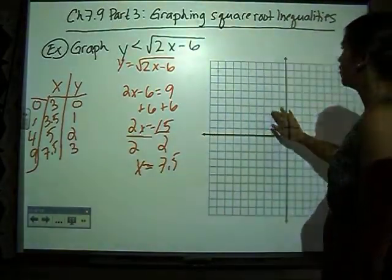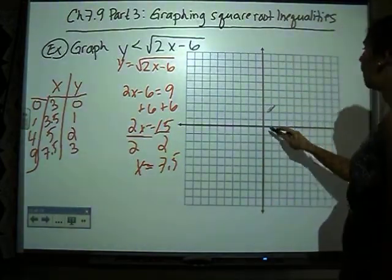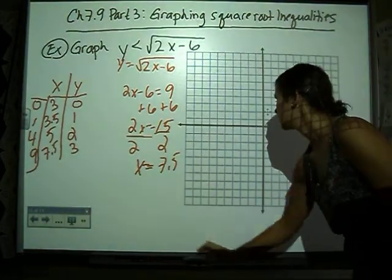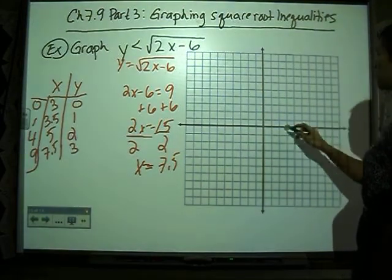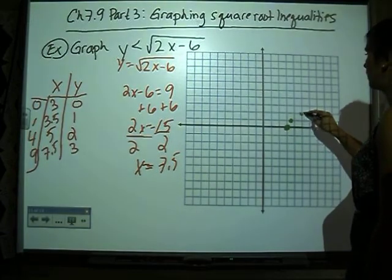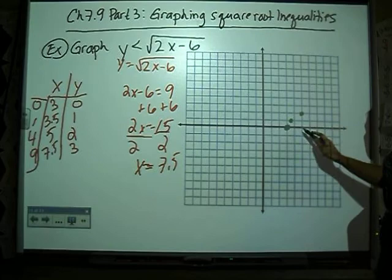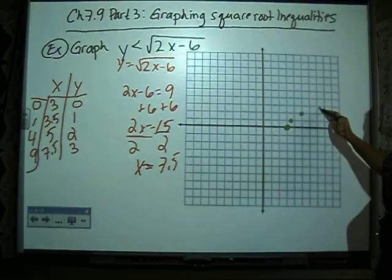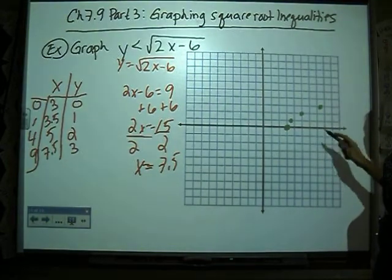Over here, we're going to graph. So we're going to be at 3, 0, then 3.5, 1, then 5, 2, and 7.5, 3.